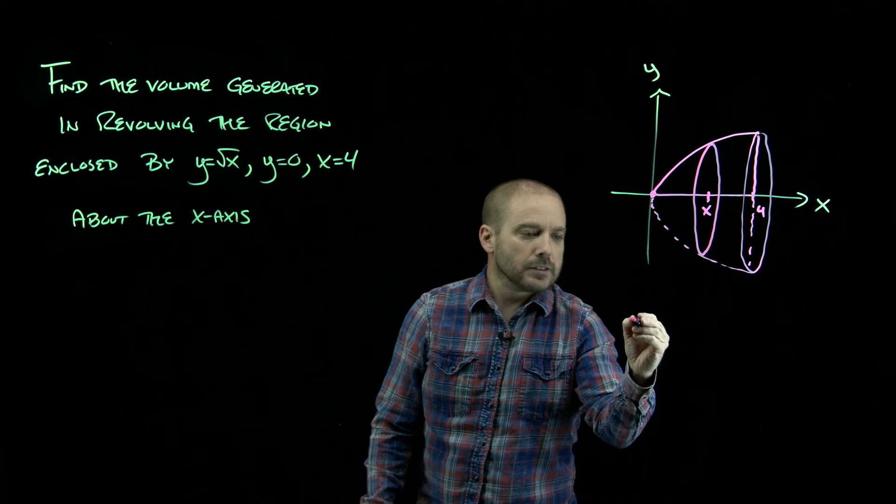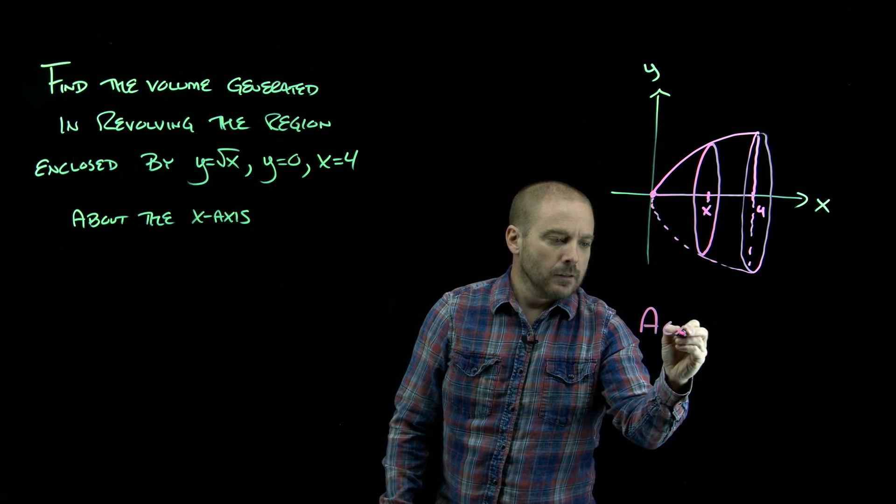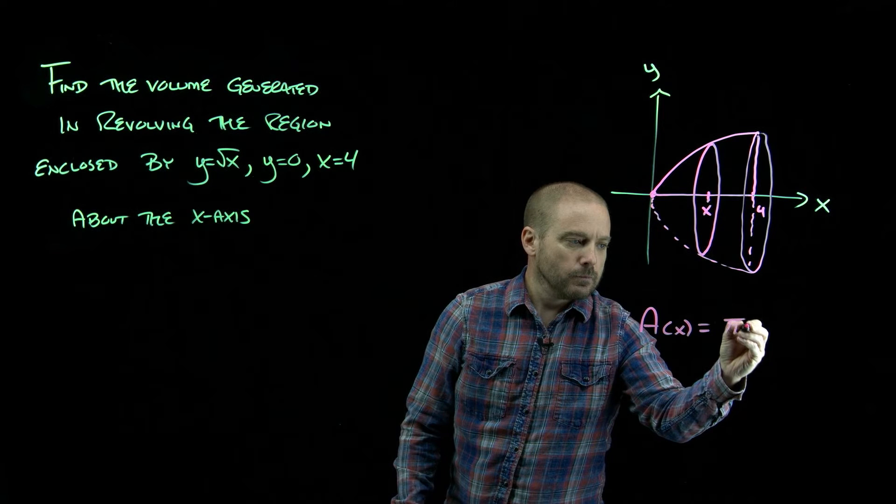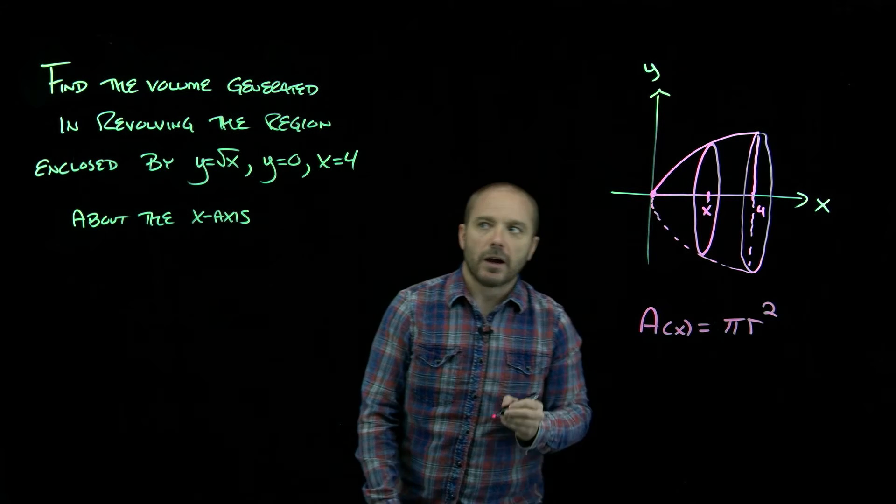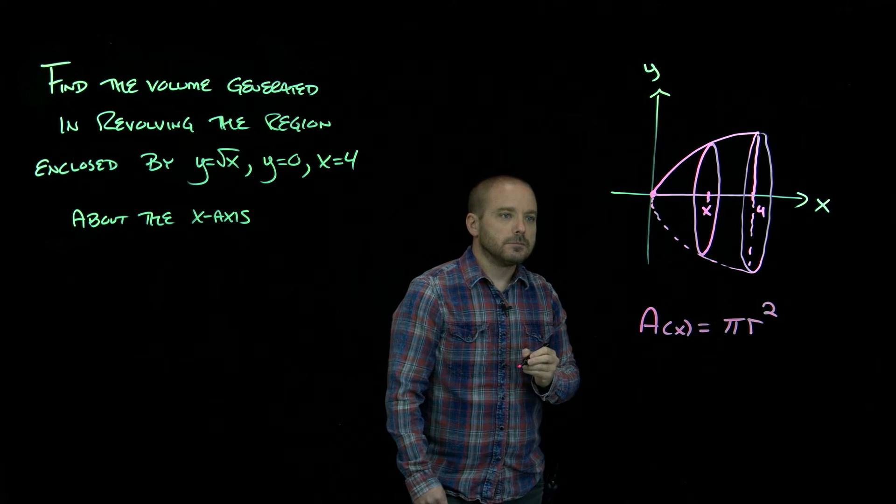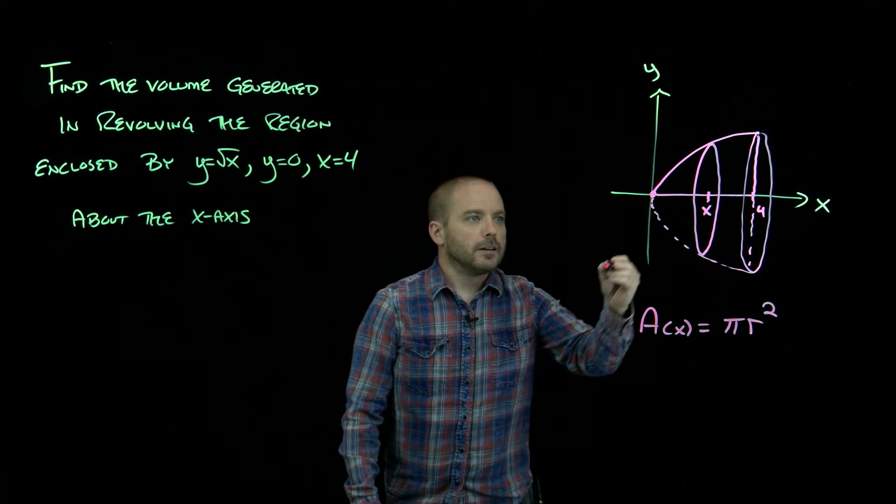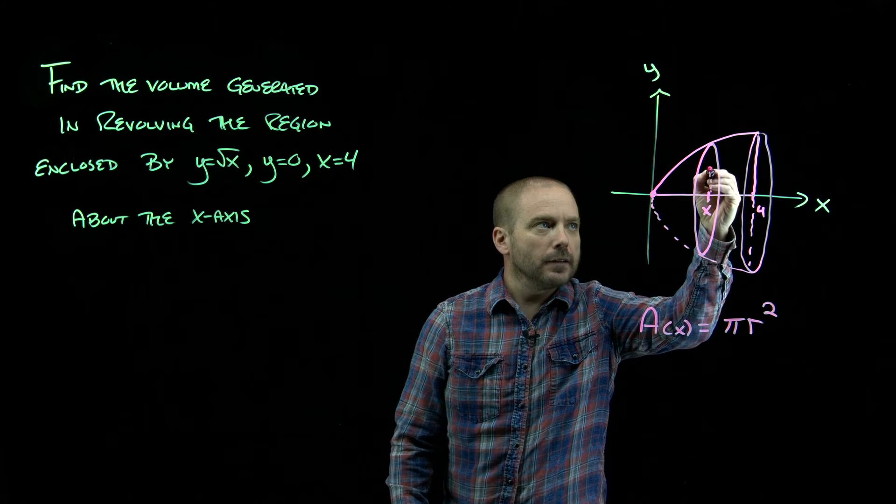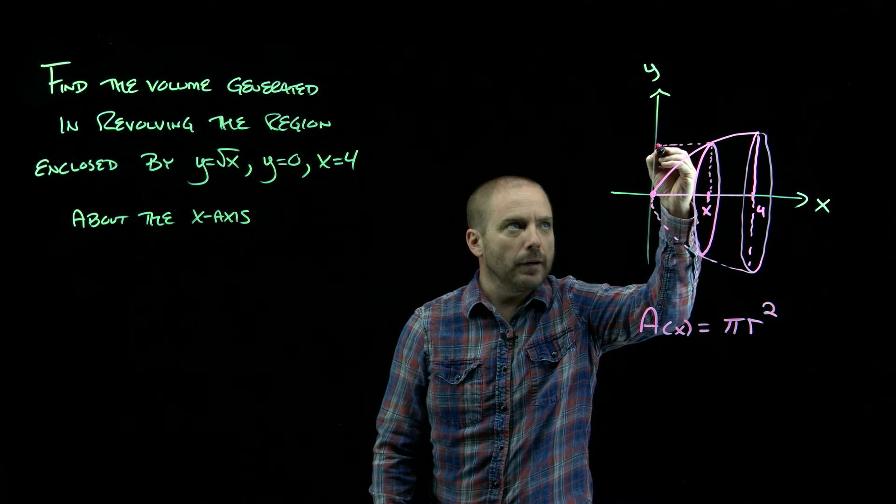So what is that cross-sectional area? Well, it's a circle, so it's pi r squared. And the radius here is being determined by the function.